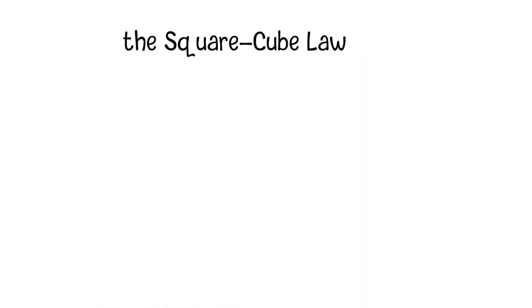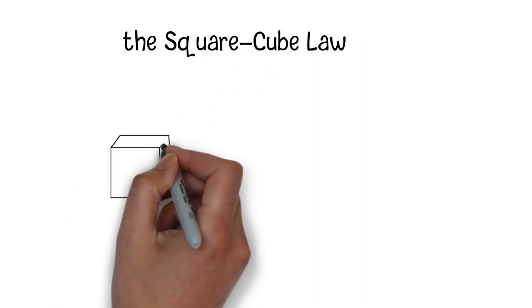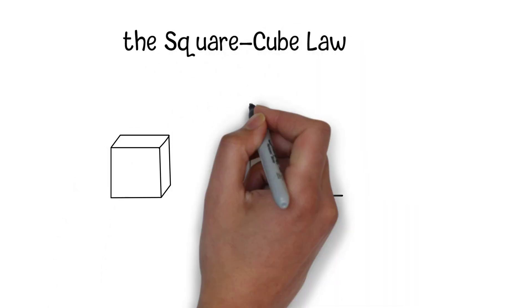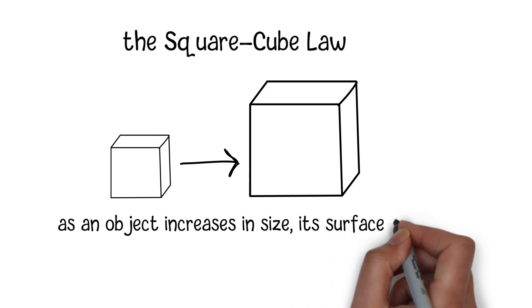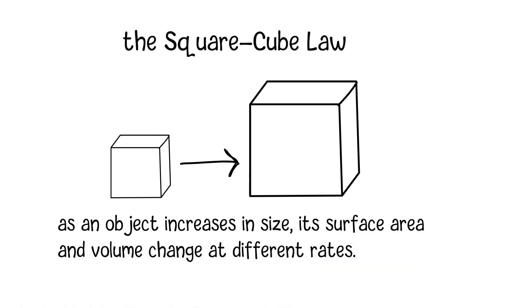It's called the Square Cube Law. But what exactly is it, and why is it so important? The Square Cube Law is a principle that describes the relationship between the size of an object and its properties. Simply put, it states that as an object increases in size, its surface area and volume change at different rates.